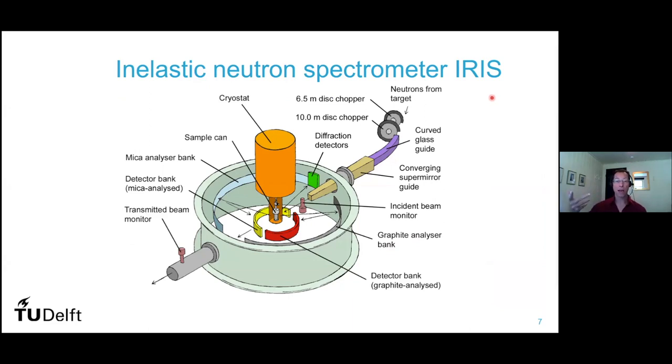It's a similar type as the ESS, but then with some different properties. And there they got an inelastic neutron spectrometer. And what you basically do is that you have neutrons coming from here, falling on your sample. And it's a time of flight mechanism. So you know exactly the energy of the neutrons.